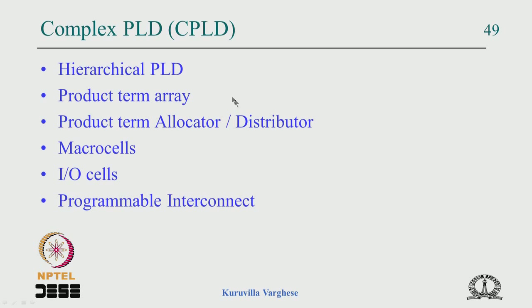In summary, any CPLD consists of multiple simple PLD sections, an interconnect linking IO pins and PLD sections, a product term array with AND gates, a product term allocator distributing those AND gates to combinational logic and registers, flip-flops with feedback, and IO pins — together forming the CPLD.